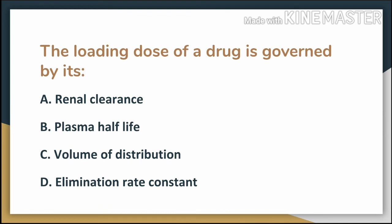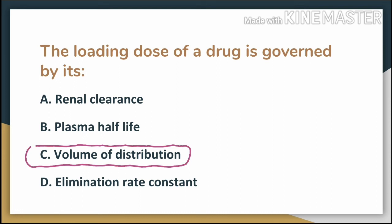The answer here is volume of distribution, option C, because the loading dose is the product of volume of distribution and the desired plasma drug concentration.